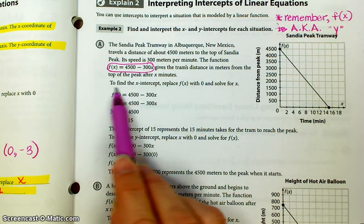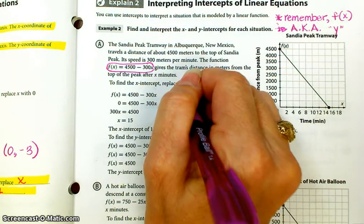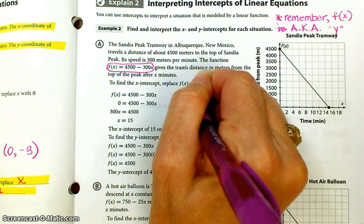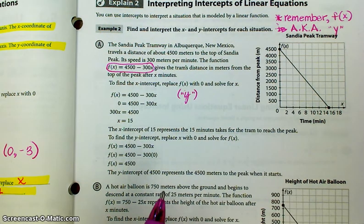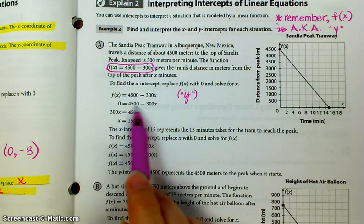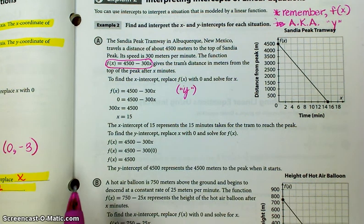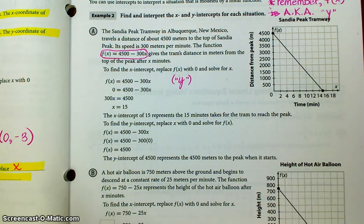So you've got a function. And remember, please, that if they give you f(x), that's kind of the same as saying y equals. So to find the x-intercept, we're going to replace f(x). That's also known as y. With 0 and solve for x. So we're going to put 0 here. And we're going to do a little bit of calculating, and we get that x is 15.